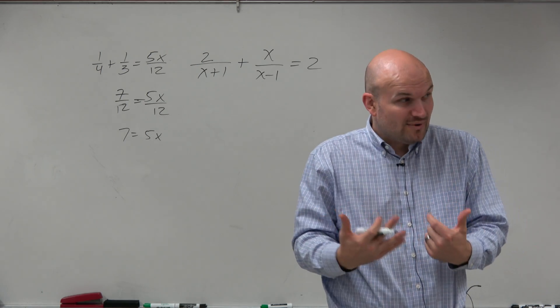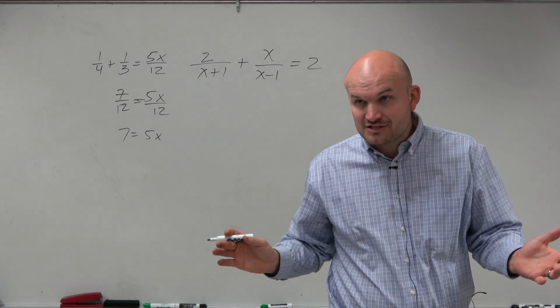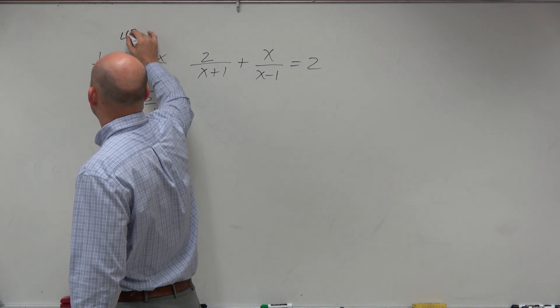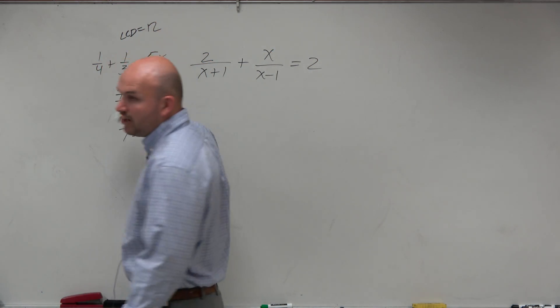Or the easy way to do it is if you just get rid of your fractions, the math is much easier. So we say, well, what's the LCD here? The LCD here is, again, 12.